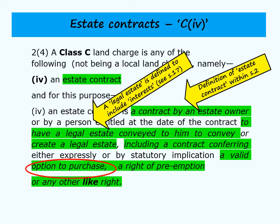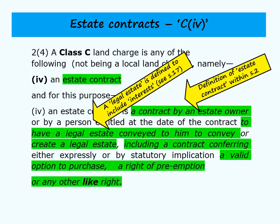A right of preemption is also within the definition of an estate contract. It is similar to an option to purchase but slightly different — the third party has a right of first refusal if the property owner decides to sell. Finally, there's a general mop-up provision covering any other type of contract relating to land not specifically defined, so those would also be registrable as a C4 land charge.